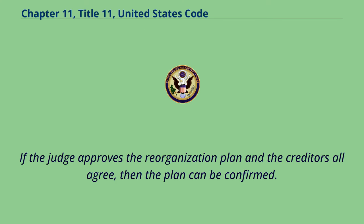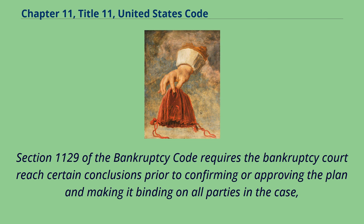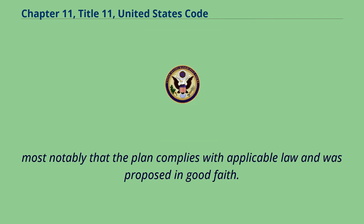If the judge approves the reorganization plan and creditors all agree, then the plan can be confirmed. Section 1129 of the Bankruptcy Code requires the bankruptcy court reach certain conclusions prior to confirming or approving the plan and making it binding on all parties in the case.